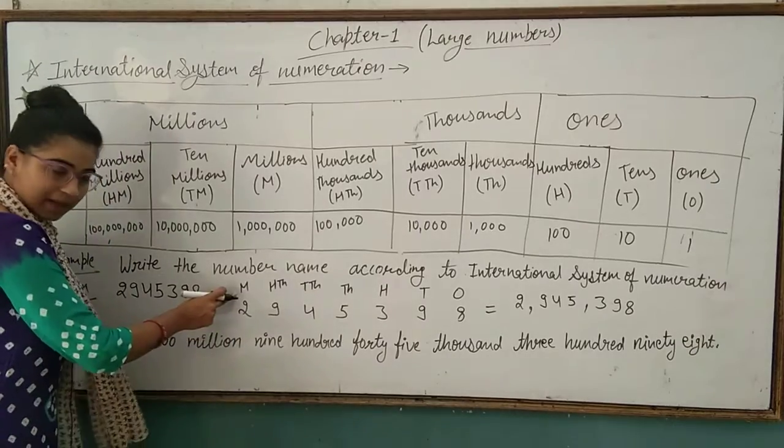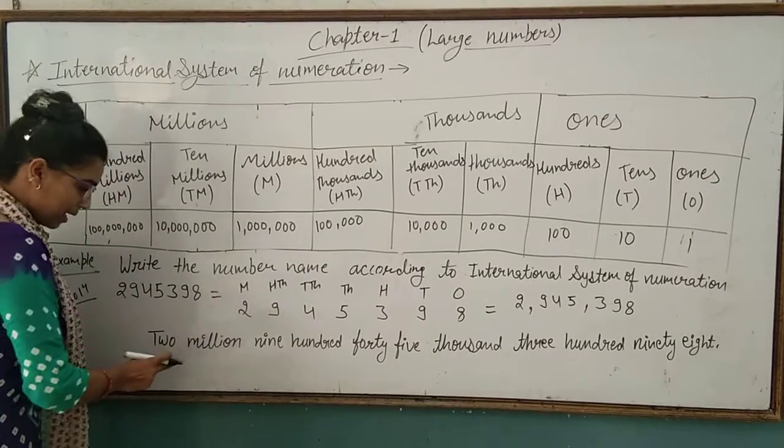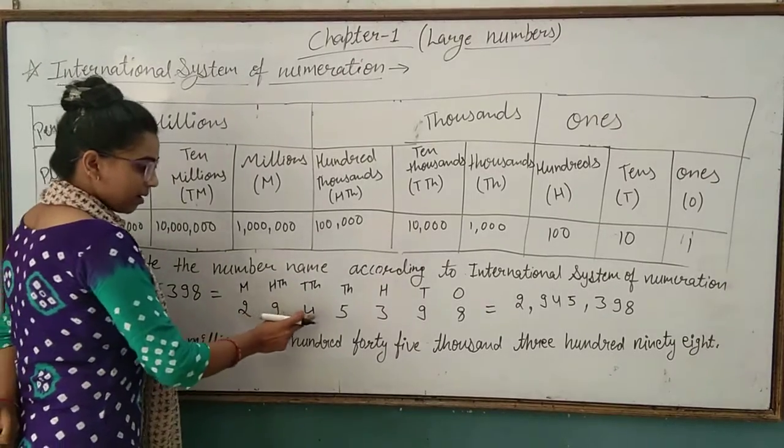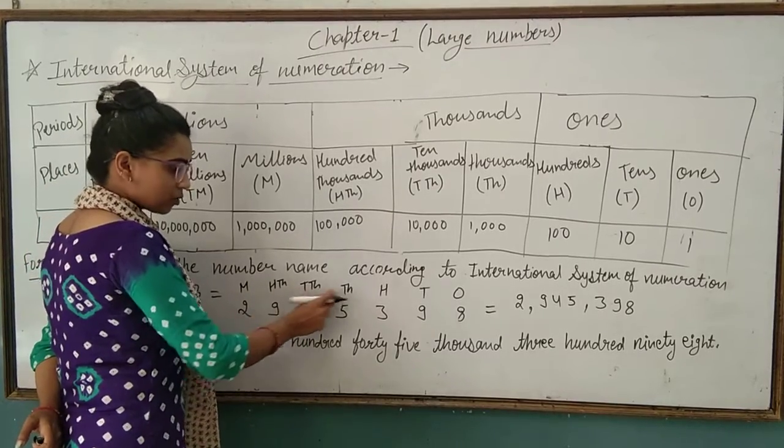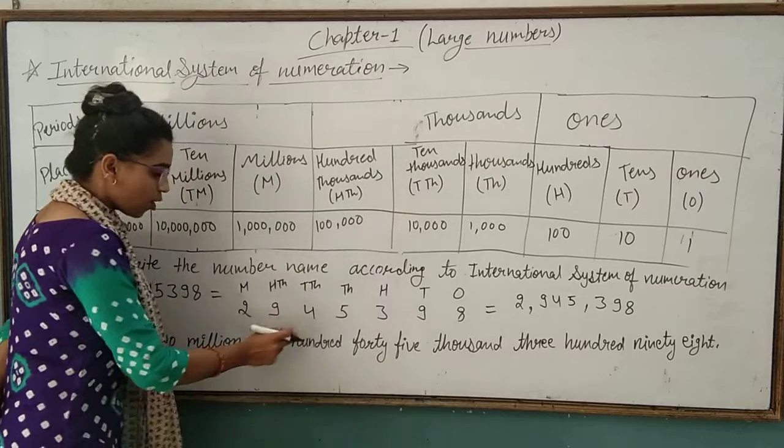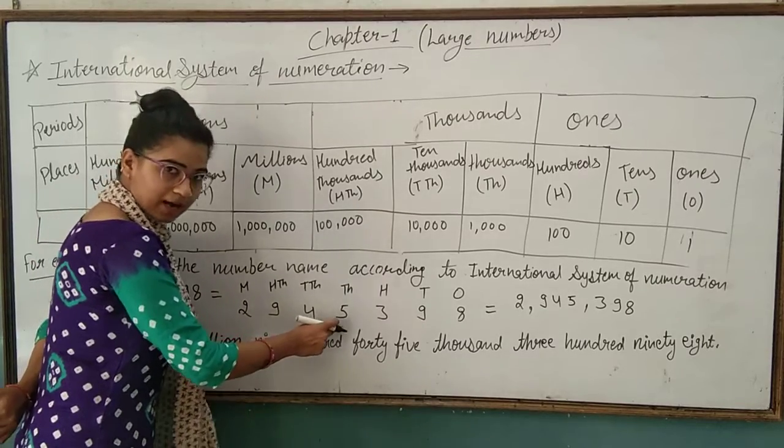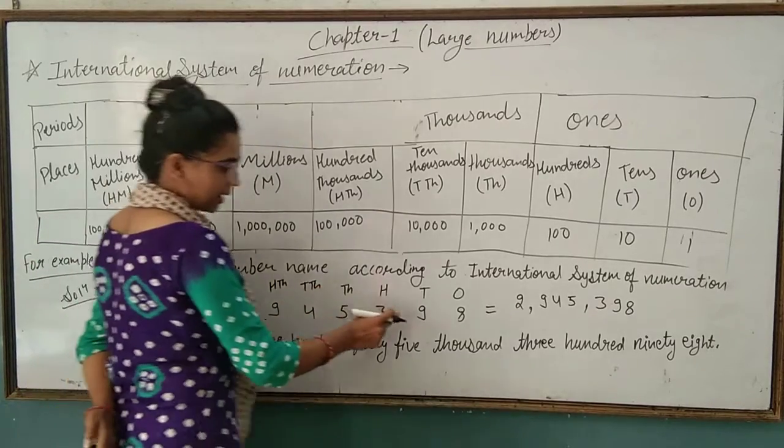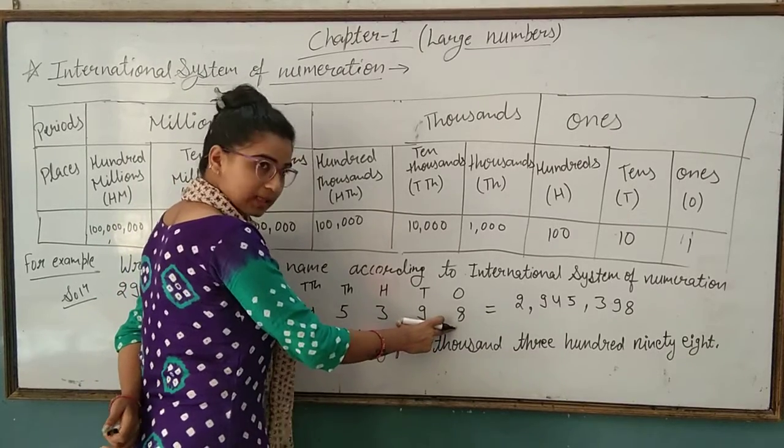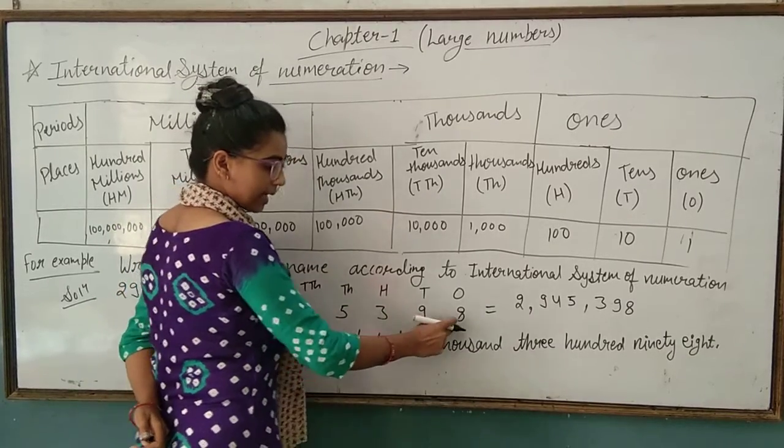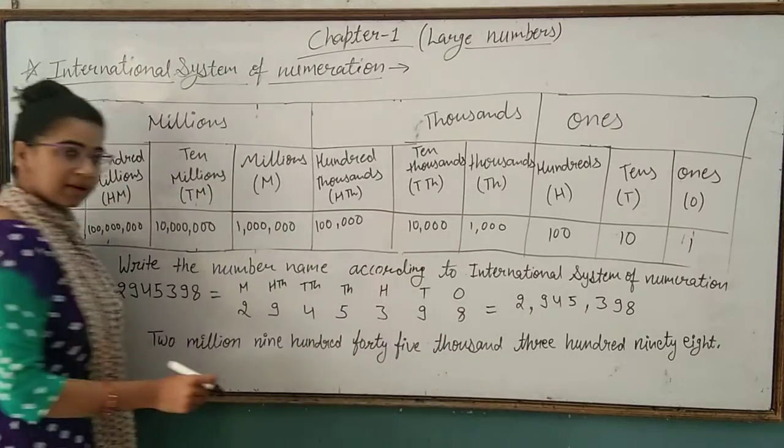2 is in millions place, so 2 million. We read hundred thousands, ten thousands, and thousands together: 945 thousand. And 398 we read together: 398.